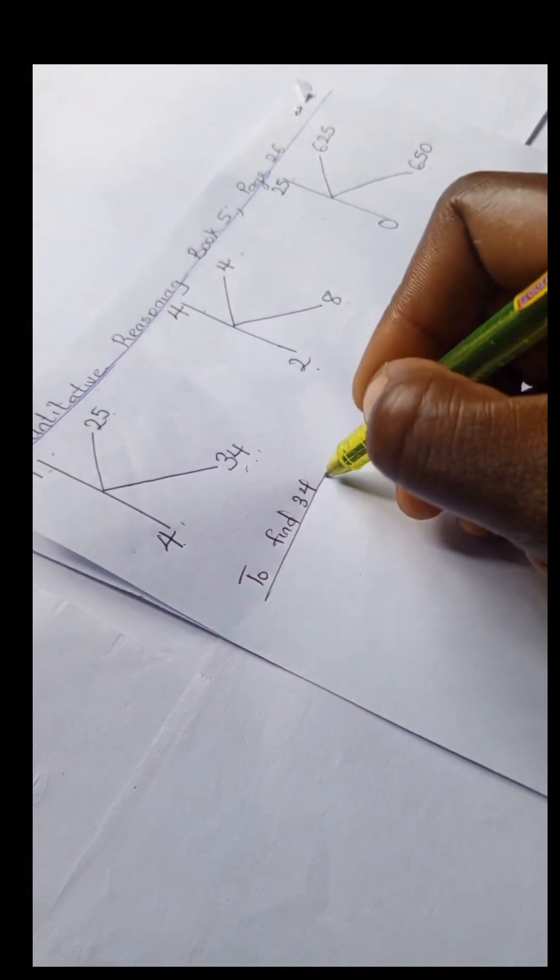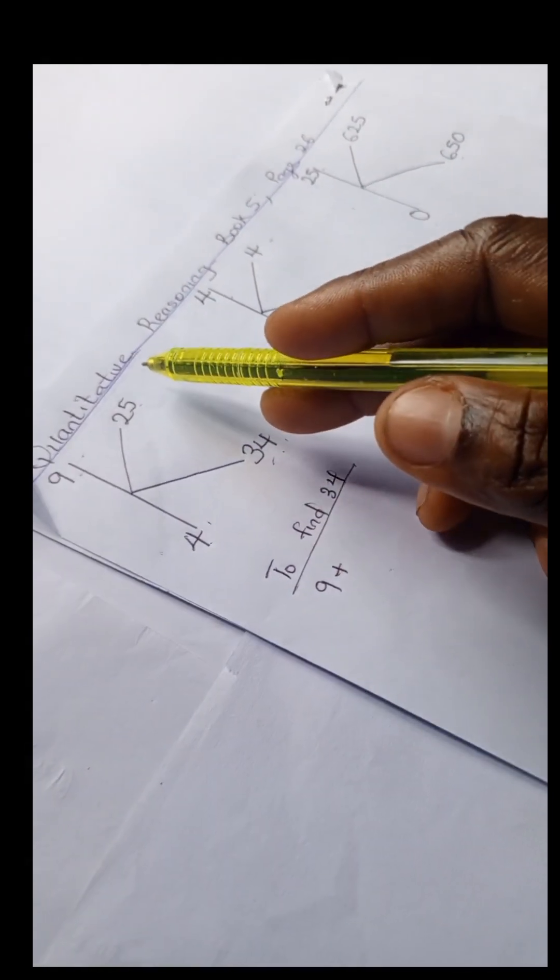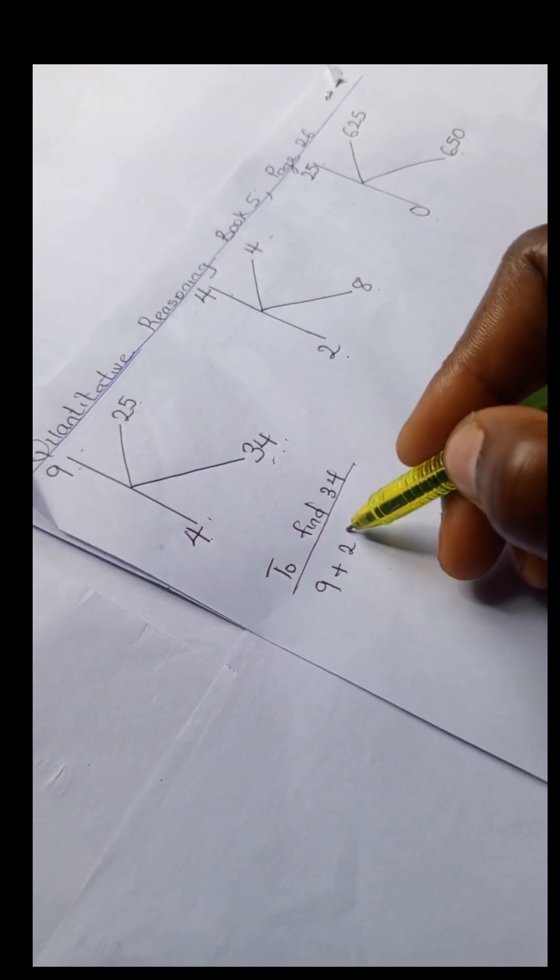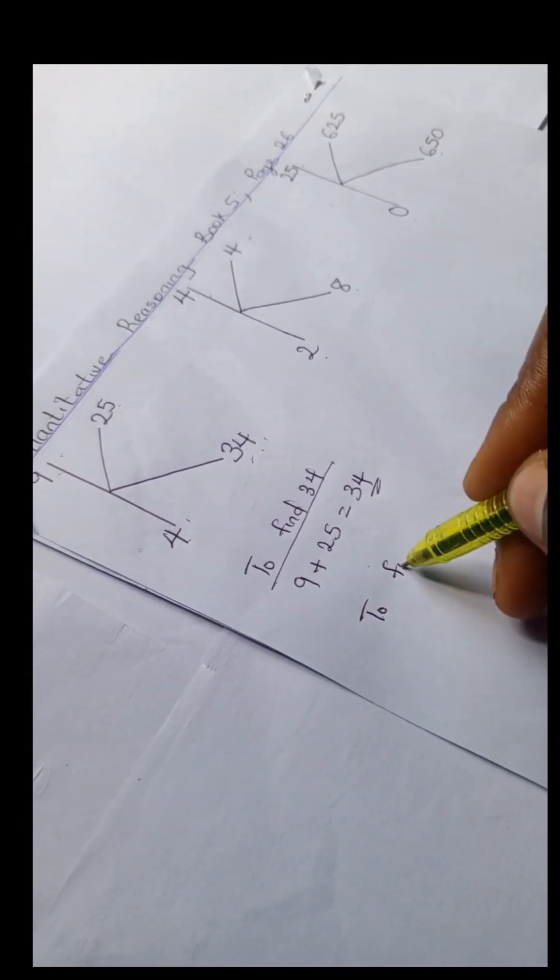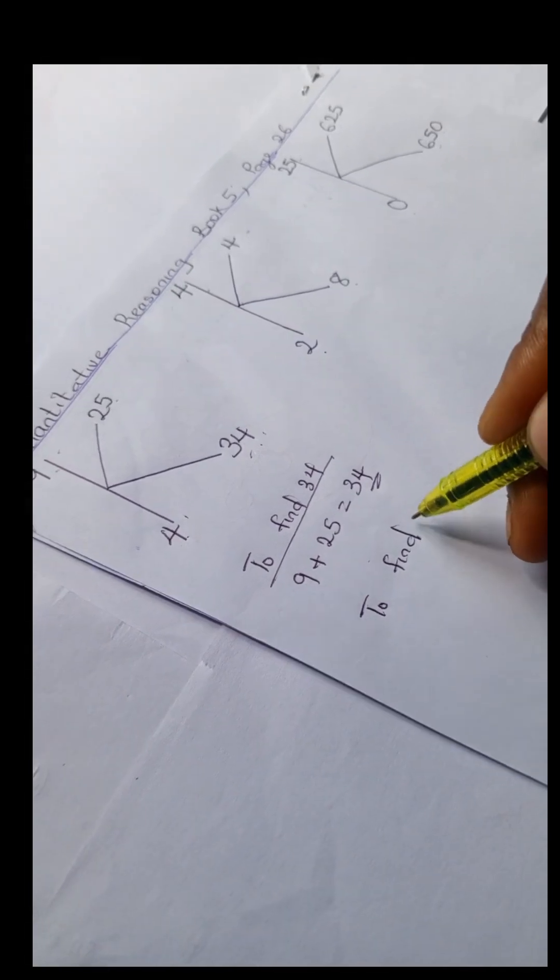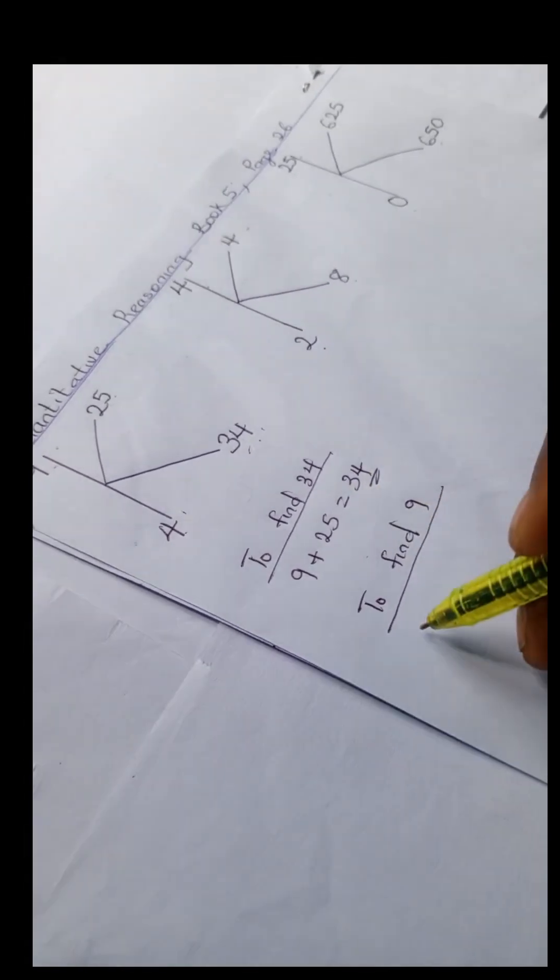Right, so we're going to work on this. To find 34, we're going to have 9 here plus 25. So 9 plus 25 is 34. Okay, so to find 9, we simply do the reverse of this.